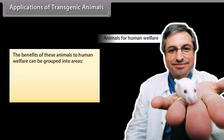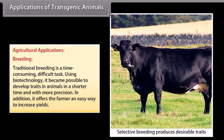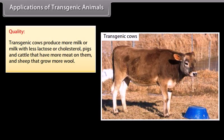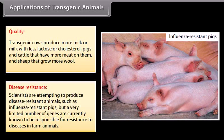Applications of Transgenic Animals: The benefits of these animals to human welfare can be grouped into agriculture, medicine, and industry. Agricultural Applications — Breeding: Traditional breeding is time-consuming and difficult; using biotechnology it became possible to develop traits in animals in a shorter time and with more precision, offering farmers an easy way to increase yields. Quality: Transgenic cows produce more milk or milk with less lactose or cholesterol, pigs and cattle have more meat, and sheep grow more wool. Disease Resistance: Scientists are attempting to produce disease-resistant animals such as influenza-resistant pigs, though only a limited number of resistance genes are currently known.